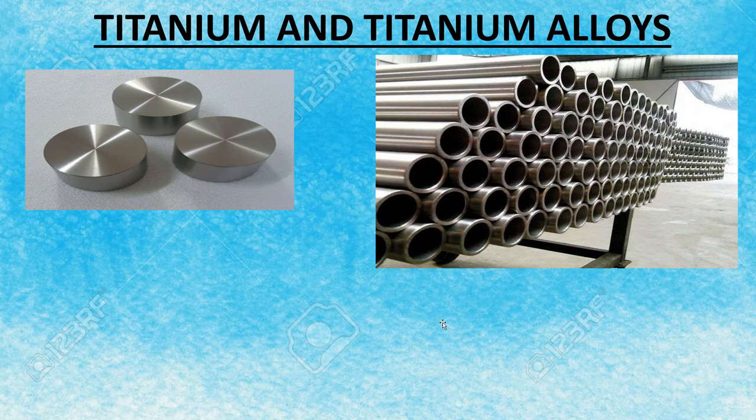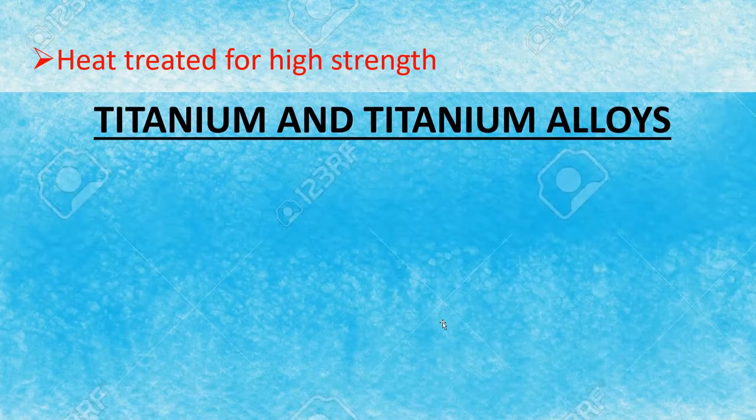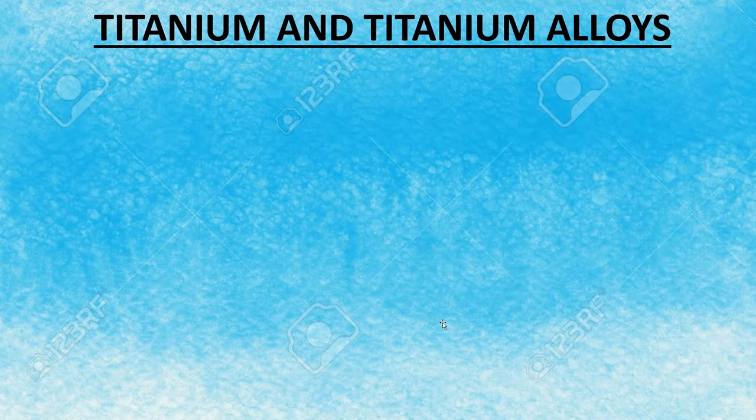Beta and alpha-beta titanium alloys are formed in the soft state and then heat treated for high strength. Alpha-beta and beta titanium alloys cannot be easily welded.